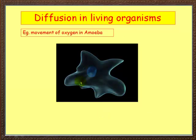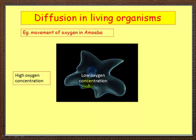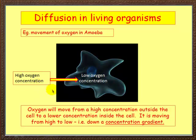Here's a single-celled organism living in fresh water called an amoeba. As the amoeba uses up oxygen by respiration, a low oxygen concentration develops inside it. In the surrounding water there is a higher oxygen concentration. So oxygen will move from the high concentration outside the cell to the lower concentration inside the cell. It is moving from high to low — moving down what we call a concentration gradient.